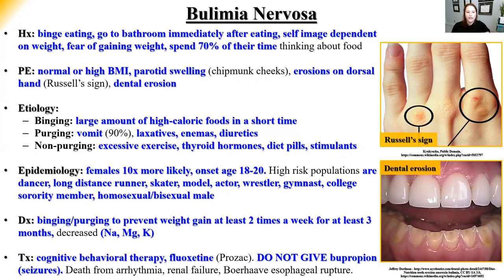Diagnostic criteria: binging and purging to prevent weight gain at least twice a week for at least three months. Electrolyte abnormalities (sodium, magnesium, potassium) result from recurrent vomiting. Treatment: behavioral therapy and Prozac. Important exam point: do NOT give bupropion (Wellbutrin) to bulimic patients — their electrolyte abnormalities lower the seizure threshold, and bupropion can trigger a seizure. Bupropion is contraindicated in bulimia.